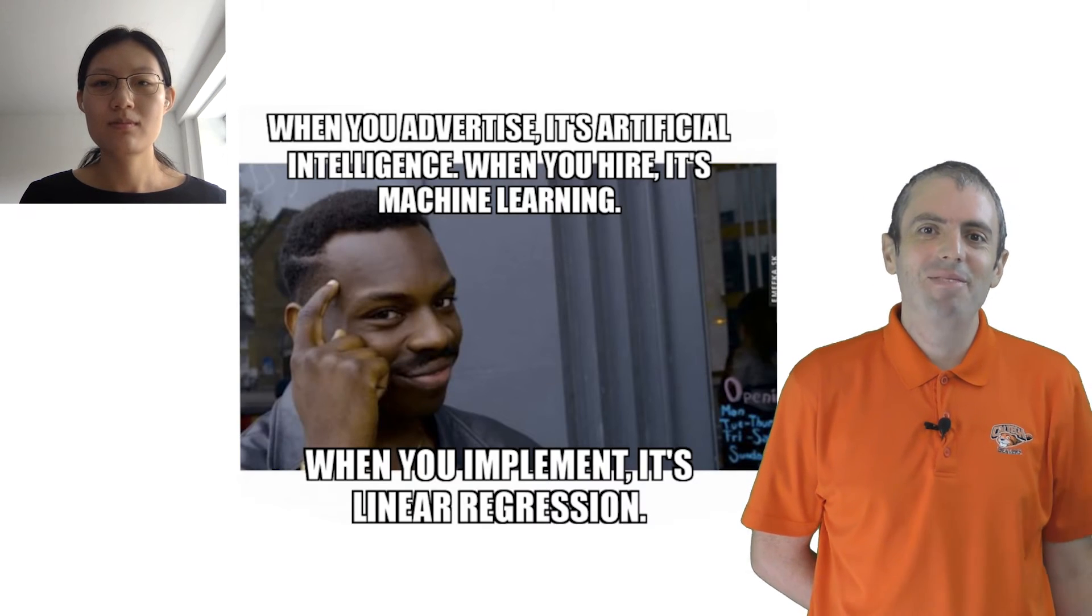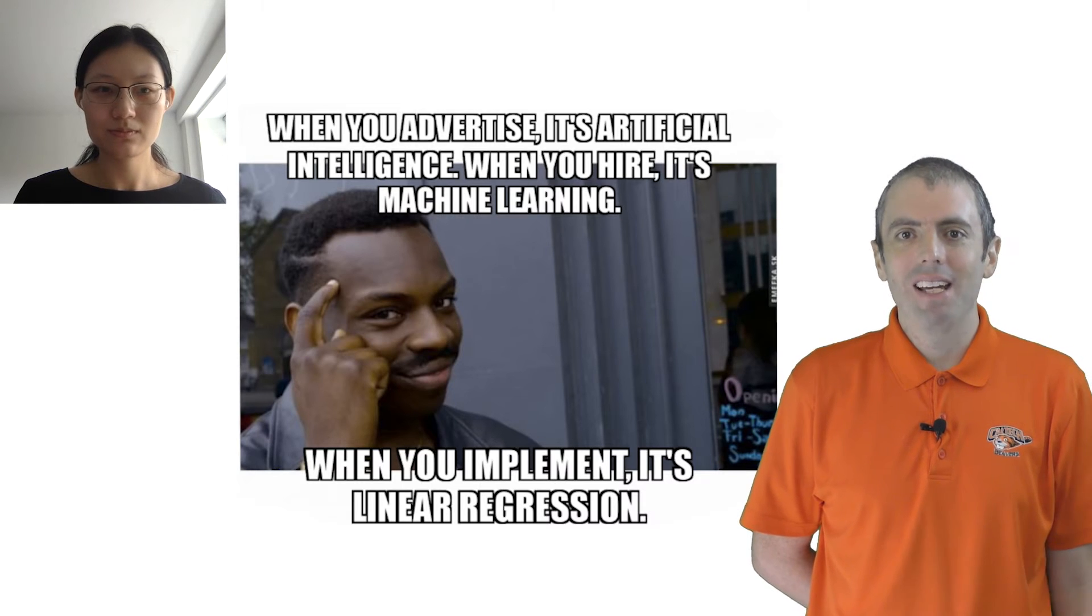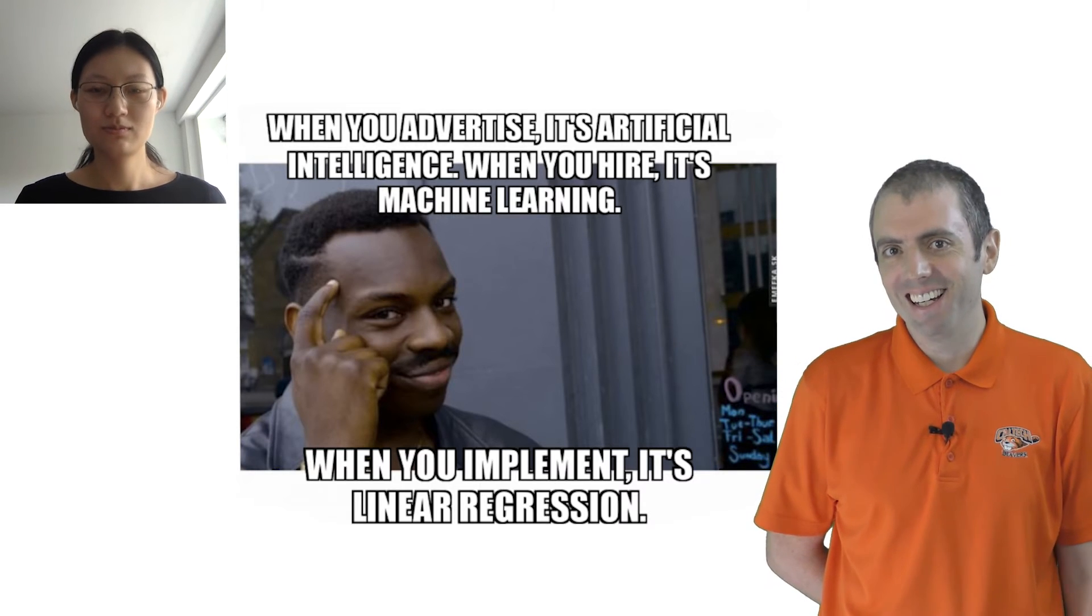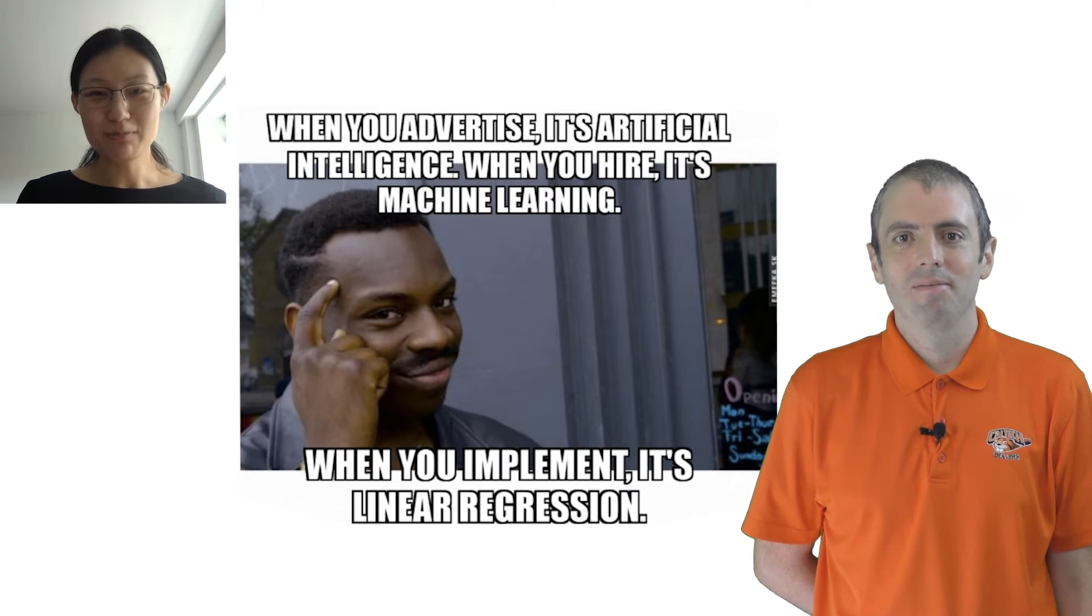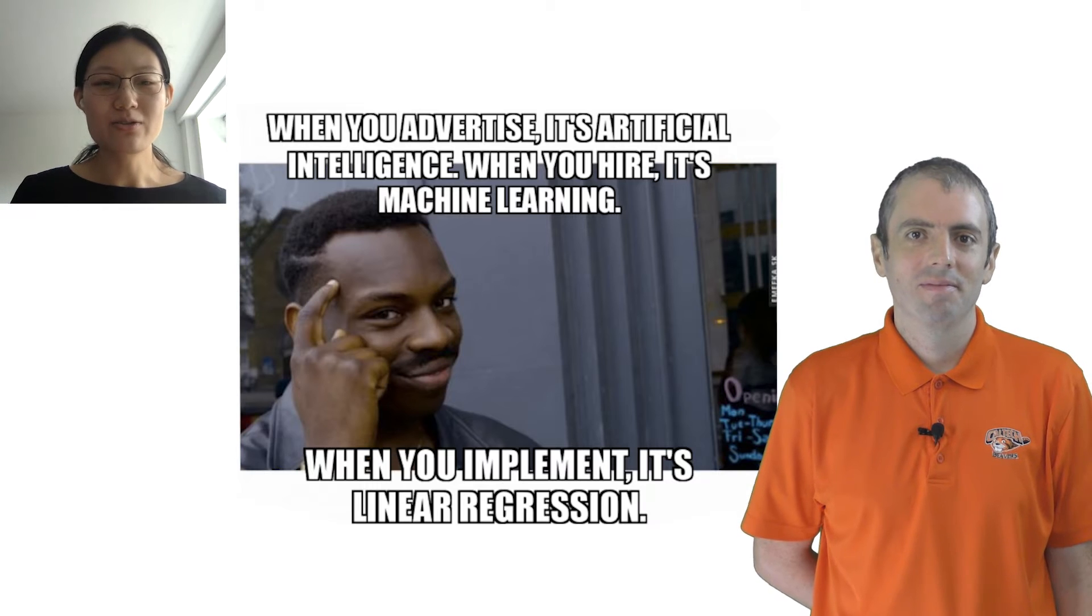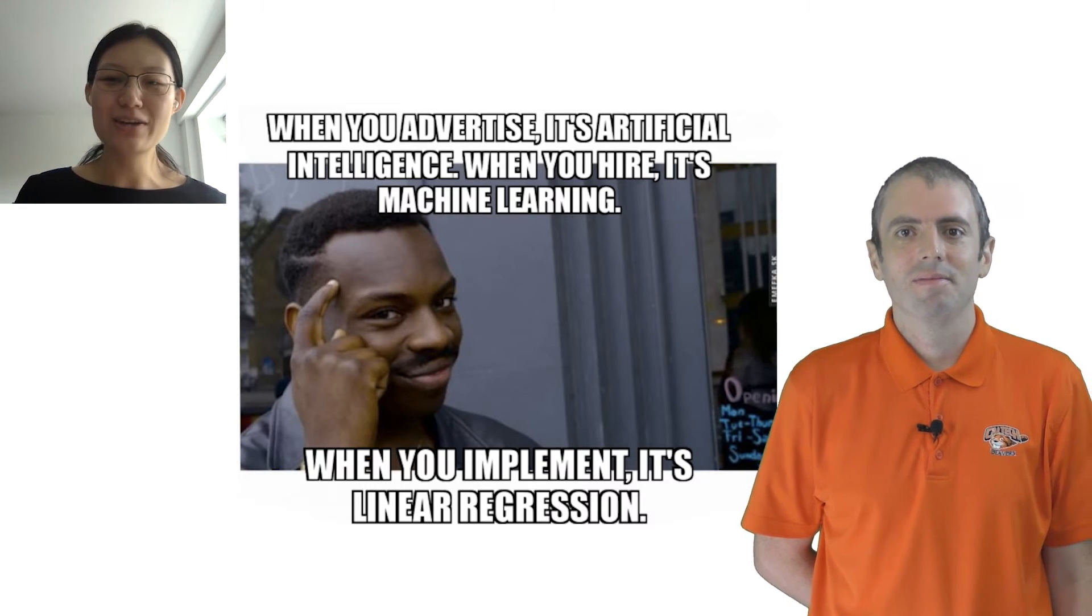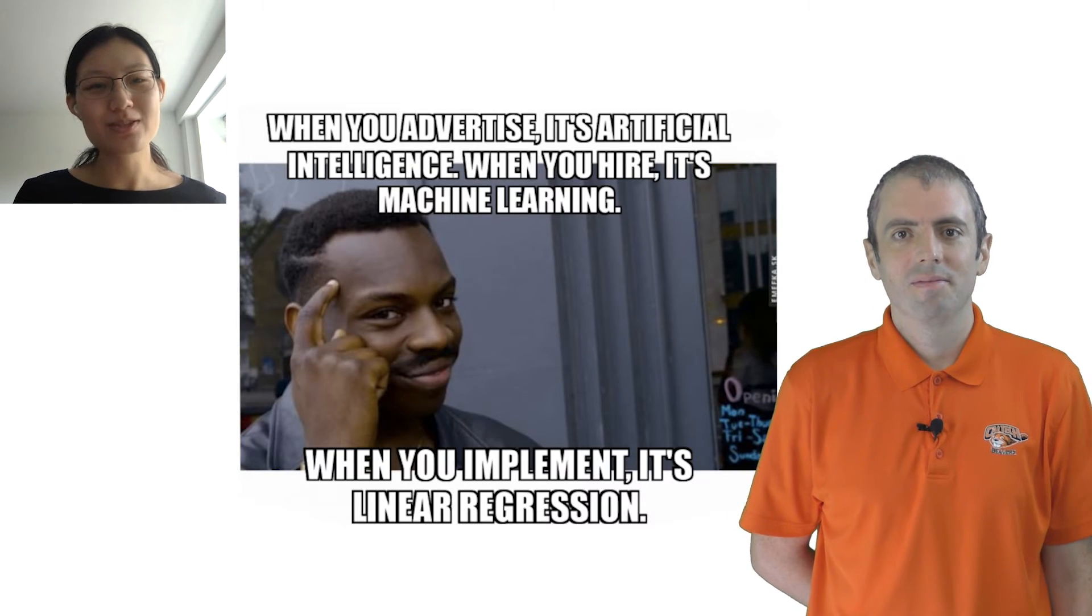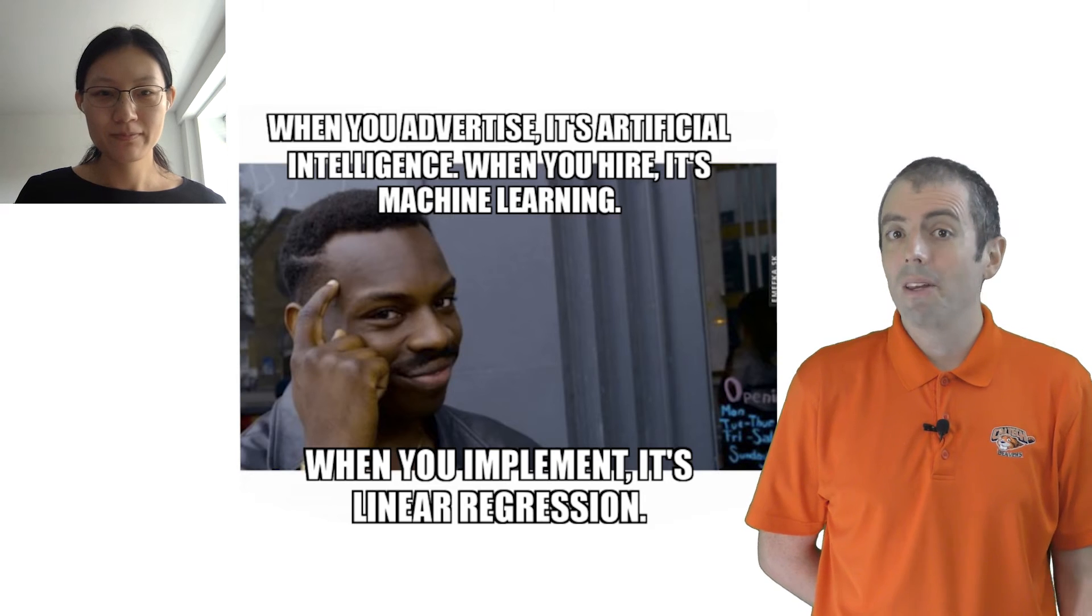Yeah, there are a lot of memes out there saying that deep learning and AI are just a fancy way of saying that we're doing regression. What do you think about that? It's true that much of deep learning builds on regression. That's why we're starting to talk about it first. And it's also true that many things that are called AI or deep learning could probably be solved by a regression model with good features and enough data.